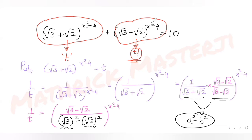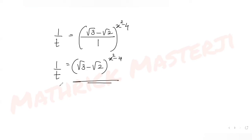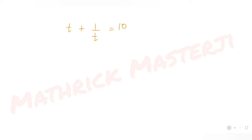So the second part of the left-hand side, (√3 − √2)^(x²−4), is simply 1/t. With the first part as t and the second as 1/t, the equation becomes t + 1/t = 10, which gives t² + 1 = 10t, or t² − 10t + 1 = 0.